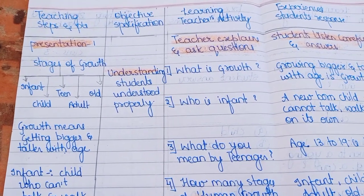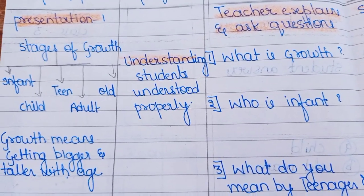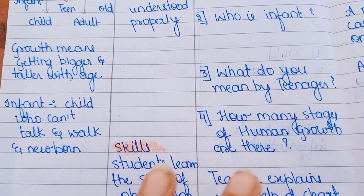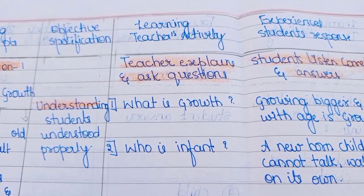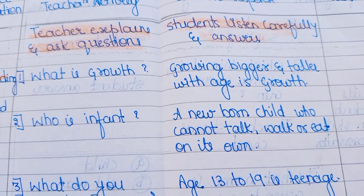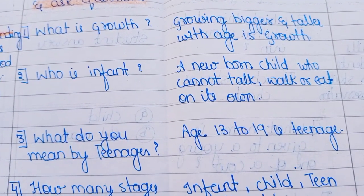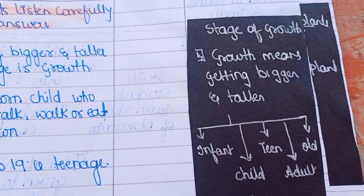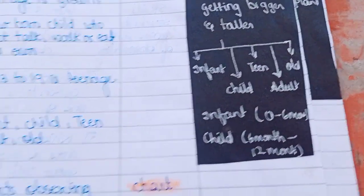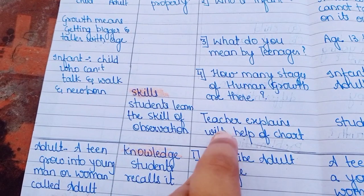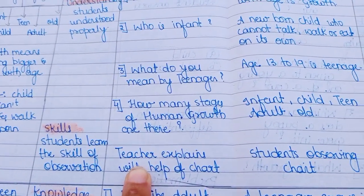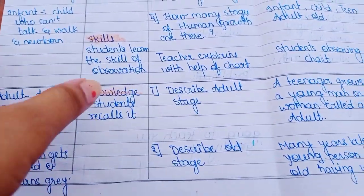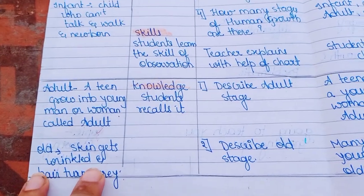Now let's turn the page and see the Presentation section. For the presentation, we have to explain everything properly for about five to six minutes. These are the main points we have to teach students. We can ask up to five questions — I have added four here. There is also blackboard work where we write the main points on the board. The teacher explains with the help of a chart, students observe the chart, and for the teaching aid we write 'chart.'